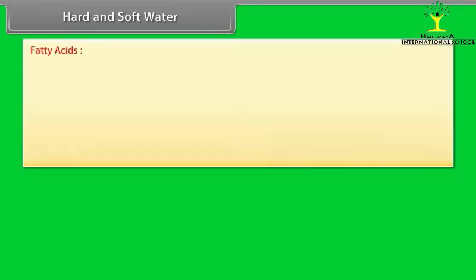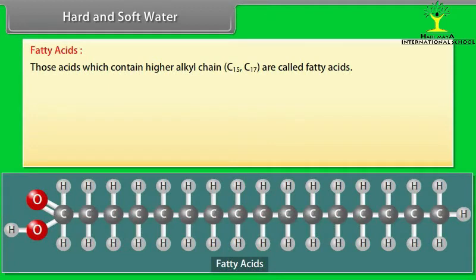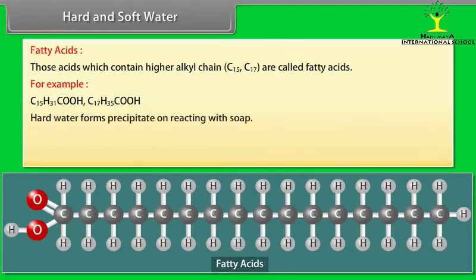Fatty acids: Those acids which contain higher alkyl chain are called fatty acids. For example, C15H31COOH and C17H35COOH. Hard water forms precipitate on reacting with soap.